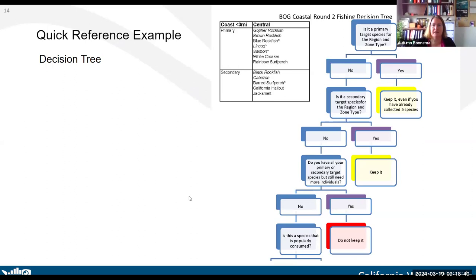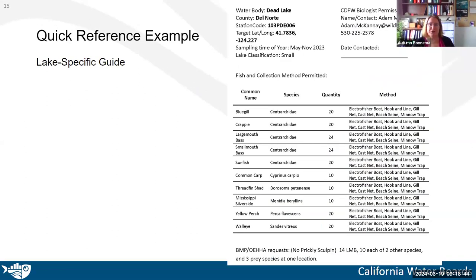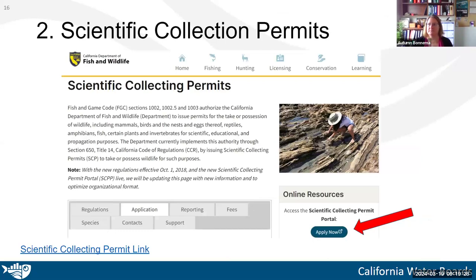Here's another tool we use — this is specific to a more confined water body such as a lake or reservoir. It includes the lake itself, where it is, who to contact, and a little bit about the permitted species. The important thing at the bottom is that you've got the requests for the project as well as the Office of Environmental Health Hazard Assessment. Usually with our lakes projects, every lake is different.